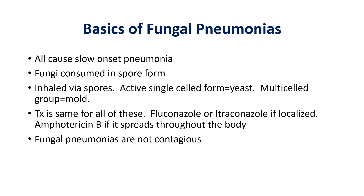These are the basics of fungal pneumonia you need to know before moving into the specific types. As we get into the different causes, I'll have mnemonics for every one to keep things simple. First: these cause a slow-onset pneumonia in most cases — not life-threatening or severe unless you're immunocompromised, such as having HIV or having had a bone marrow transplant. Those are the cases where dissemination is more likely.